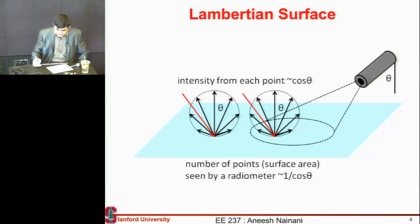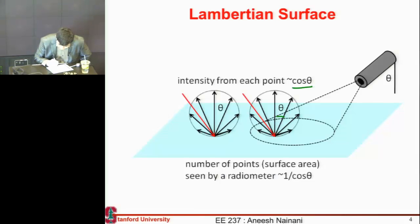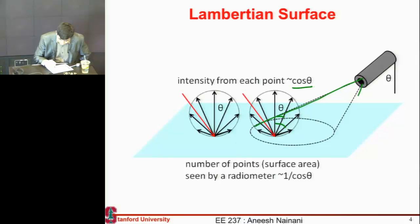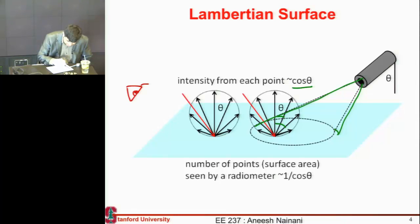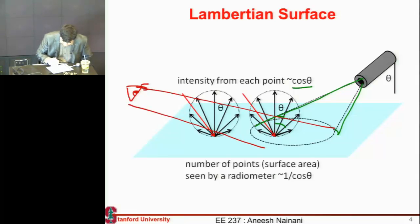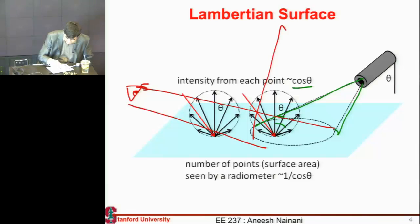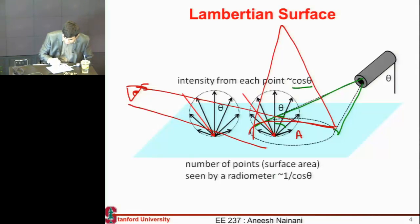The importance of this cos theta dependence can be understood from this figure. My intensity has this cos theta dependence — when at an angle theta from the surface, my intensity is reduced by cos theta. Now think about a person observing this light at the same angle theta from the normal. How much of the surface area will they see? Standing directly at the normal, they see area A. But looking from an oblique angle, they see this projected area, which is A divided by cos theta.